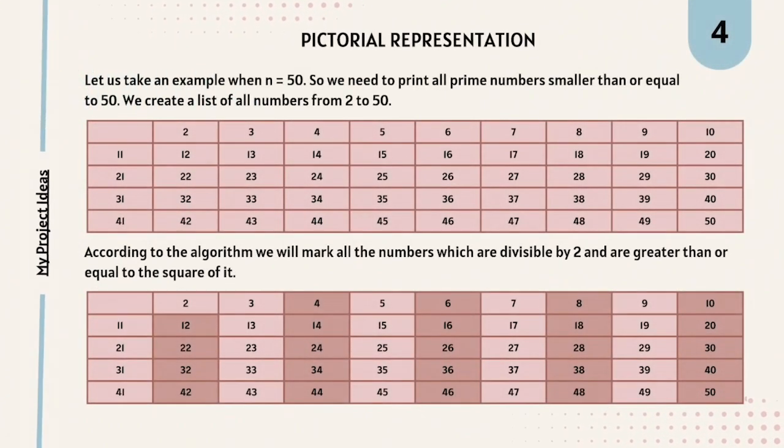So now let's have a pictorial representation. If you did not understand that illustration, just have a look at this pictorial representation. We have taken an example where n equals 50. We have to print all the prime numbers that are smaller or equal to 50. Prime numbers start from 2. So let's iterate from 2 to 50. Here is a list of numbers from 2 to 50. According to this algorithm you have to mark those numbers that are divisible by 2.